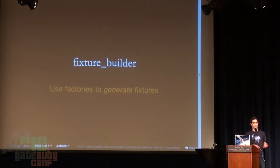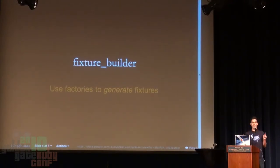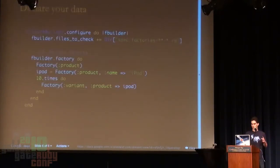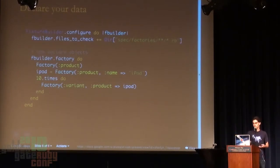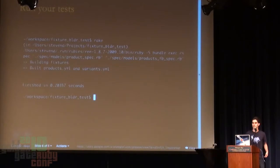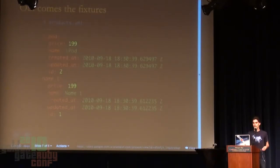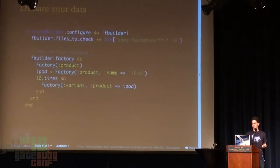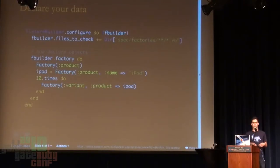So enter Fixture Builder. We're going to use factories to generate fixtures. We define a block of code, that block generates large numbers of objects, and then at the end of the day that gets serialized. In the middle part of the screen you can see we're defining a product, maybe two products, some variations of those products. As soon as that end is hit, the state of the database is serialized. You can see it says 'building fixtures' and it builds products.yaml and variance.yaml. Out come the fixtures.